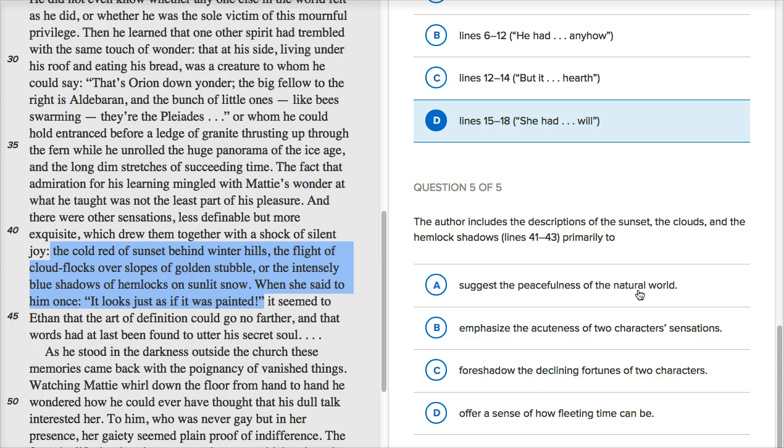So, this is what they're describing over here when we're talking about the sunset, the clouds, the hemlock shadows. So, it suggests the peacefulness of the natural world. Oh, yeah. Emphasize the acuteness of two-character sensations. Yeah, I like that, because he's talking about him, in the passage we read it, that he was wondering, is he the only person who feels so strongly about nature and the beauty of the natural world? But he's, at the time, he said, but I think I found someone in this Maddie who connects with this sensation, who understands it.